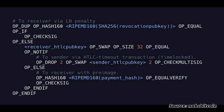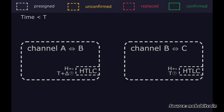A HTLC, or Hash Time Lock Contract, is a conditional payment from sender to receiver. It can be spent immediately by the receiver by revealing the pre-image to a hash H, or reclaimed by the sender after some timeout. By securing the HTLC on each hop with the same hash lock, payments can be routed atomically. Carol can't claim the outgoing HTLC without revealing the pre-image, which Bob can then use to redeem the incoming HTLC from Alice — at least that's the theory.